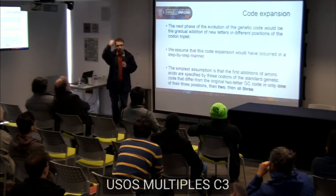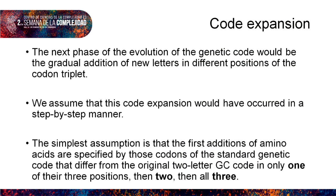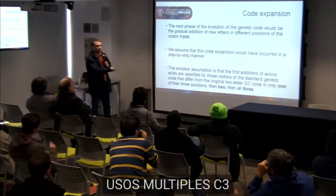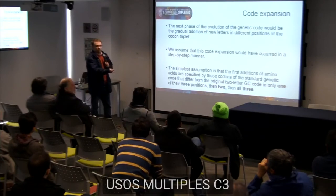How do we go from this basic code to the standard genetic code? We can assume a step-by-step process whereby one by one the code added the new pair AT or AU, thereby adding new amino acids. We look at codons differing from the original GC code in one of three positions, then in two of three, then in all three.